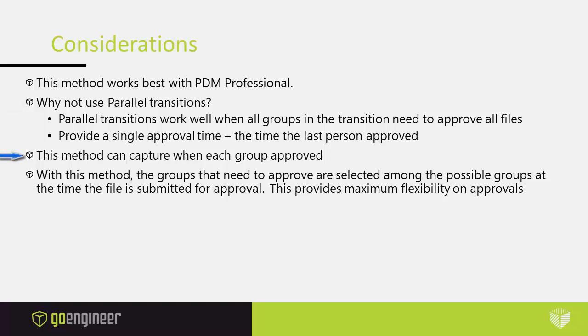Also, the parallel transitions provide a single approval time — that's the time when the last person approved it. If you want to capture when each person approved the file, then you would need to use this particular method. This method can capture when each group approved it, and also with this method the groups that need to approve are selected among the possible groups at the time the file is submitted for approval. This does provide maximum flexibility on approvals.